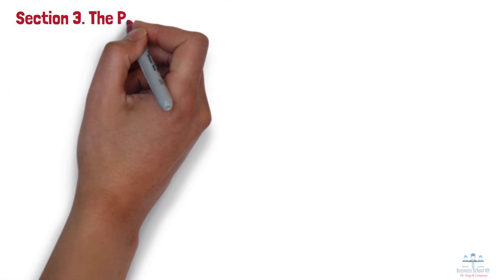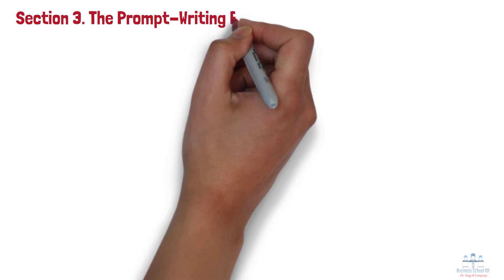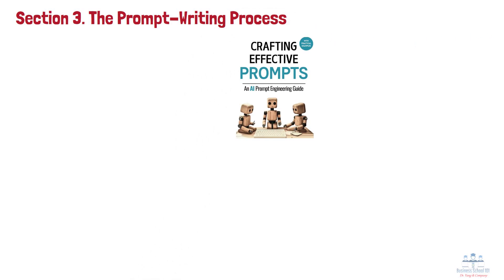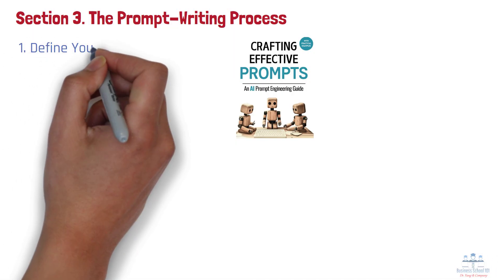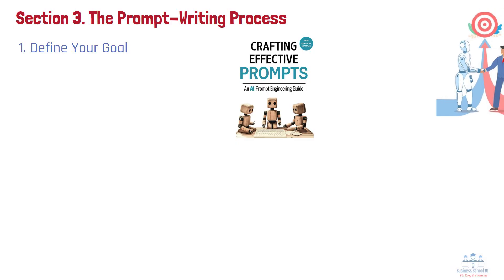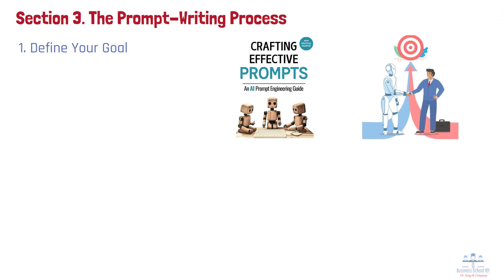Section 3: The Prompt Writing Process. Crafting effective prompts for AI interactions involves a structured four-step process. Let's explore each step in detail. Step 1: Define Your Goal. Begin by clearly identifying what you aim to achieve with the AI interaction.